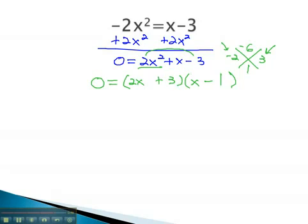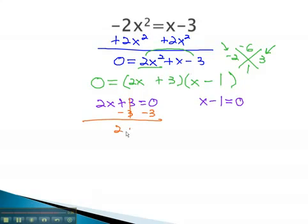2x plus 3 equals zero, and x minus 1 equals zero. The equation is solved quickly by subtracting 3, giving us 2x equals negative 3, and dividing by 2 to get our first solution, negative 3 halves.